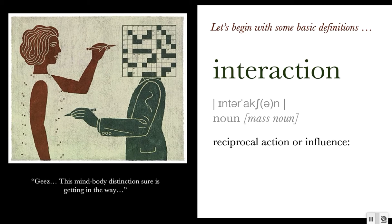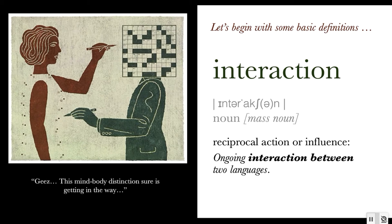Reciprocal is the key word here, because it means that whatever is taking place between two or more parties — whether they be humans or from a human to a piece of technology like a smartphone — the influence and the action are moving in both directions simultaneously. We can think about this in that an interaction is ongoing and takes place in the space between. None of it can be sensed without the presence of a feedback loop.